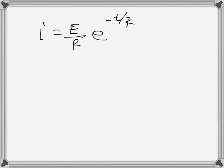So the current expression becomes i = (E/R)·e^(minus t over RC). That is the current expression for an RC circuit when the switch is closed.